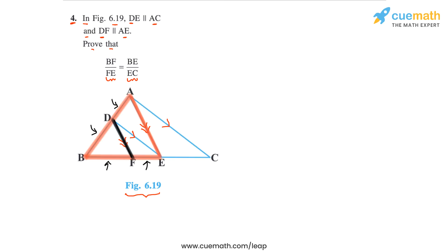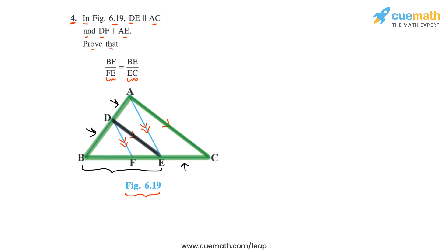To summarize: first, applying the BPT to triangle ABE gives us BF by FE equal to BD by DA. Then, applying the BPT to triangle ABC gives us BE by EC equal to BD by DA. Both ratios are equal to BD by DA, so the two ratios will be equal to each other.